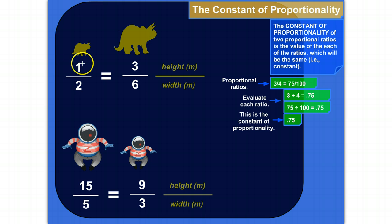So here's a proportion. We've got two ratios. We've got two different meseratopses here, and I'm comparing their height and width. For this one, its height is 1 meter and its width is 2 meters. And on this bigger one, its height is 3 meters and its width is 6 meters. This equal sign says that these ratios are proportional, meaning if you evaluate them, they have the same value.